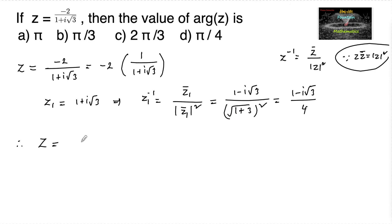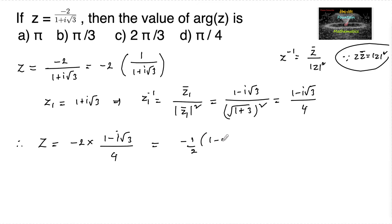Therefore z is equal to minus 2 into 1 minus i root 3 upon 4, or we can write minus 1 upon 2 times of 1 minus i root 3, which is minus 1 by 2 plus i root 3 by 2. So here is our complex number in standard form.